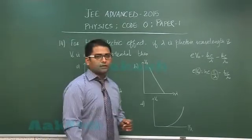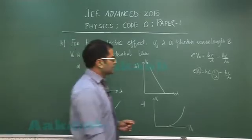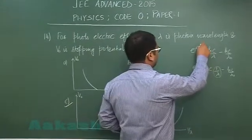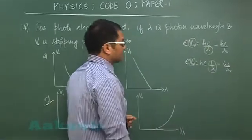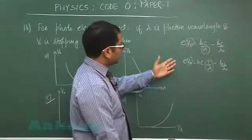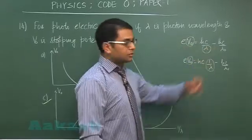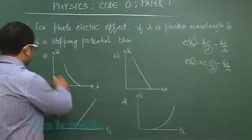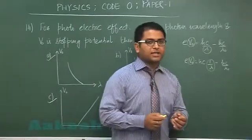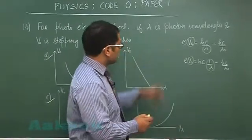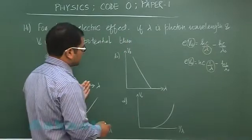Now if we go for the graph of V0 versus lambda, that would be a curve. Quite obviously, if you differentiate it, then you could easily find that the correct relation would be A, or even simply by virtue of experience you could see that with increasing lambda, V0 decreases.